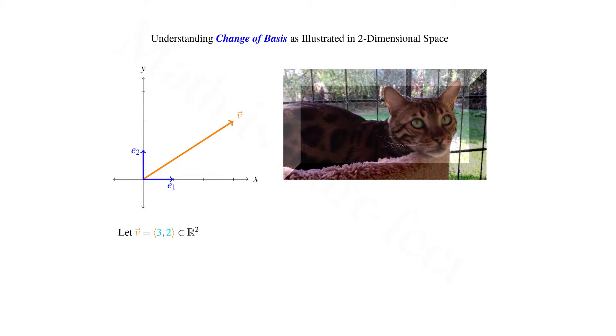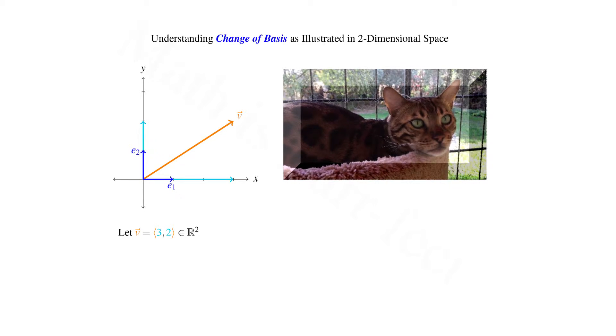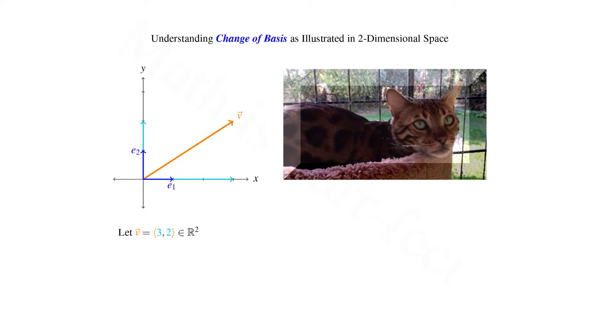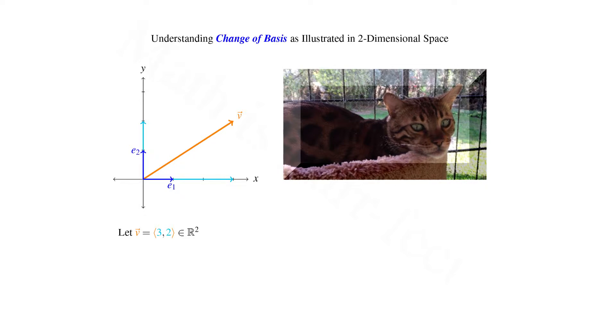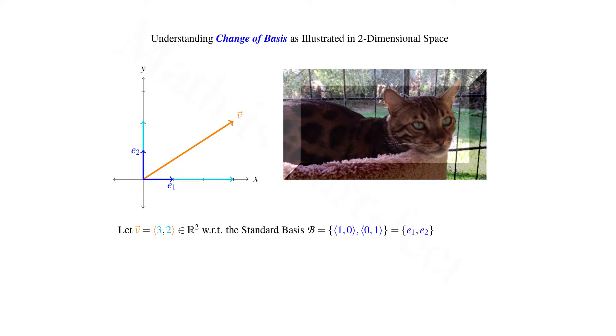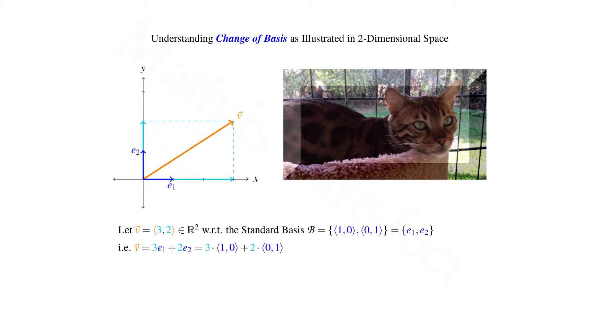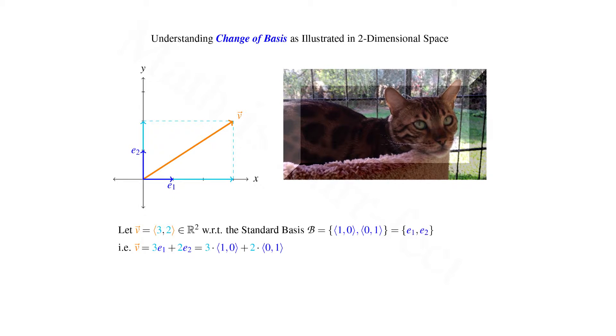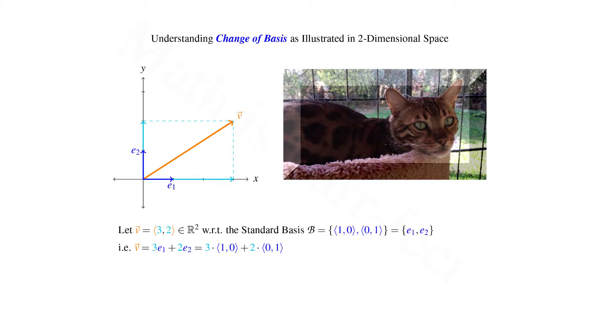As pictured, vector v is given as 3,2, which means that we go out to three times the length of e1, and then go up to twice the length of e2, where e1 and e2 are the vectors of the standard basis b. That is, v is equal to 3 times e1 plus 2 times e2.